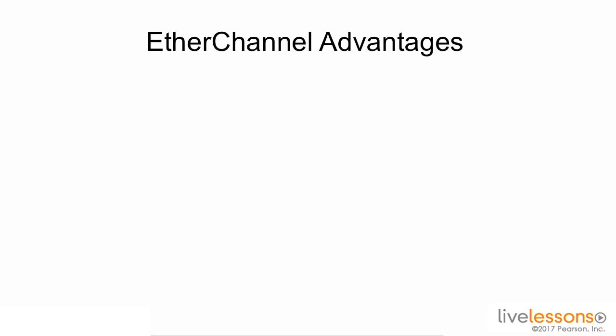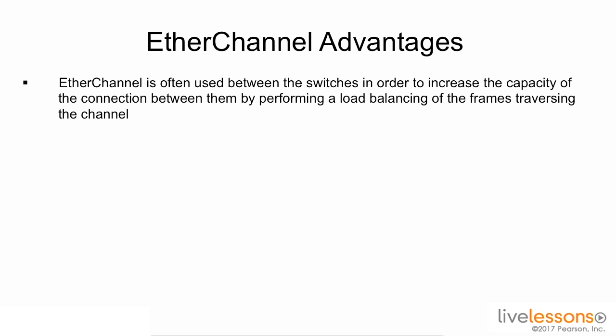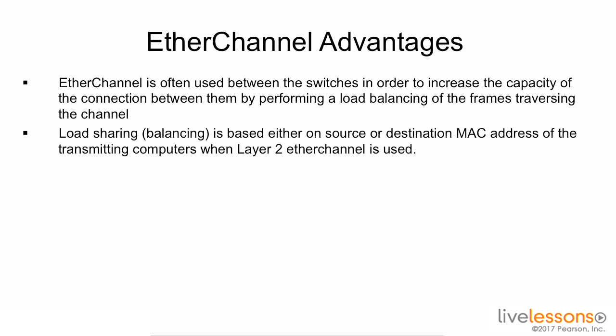In the data center, we use EtherChannel because it offers many advantages. An EtherChannel or port channel is often used between switches to increase the capacity of the connection between them by performing load balancing of frames traversing the EtherChannel. Load sharing or balancing is based either on source or destination MAC address of the transmitting computers when a layer 2 EtherChannel is used. This can also be changed to use other parameters as well.